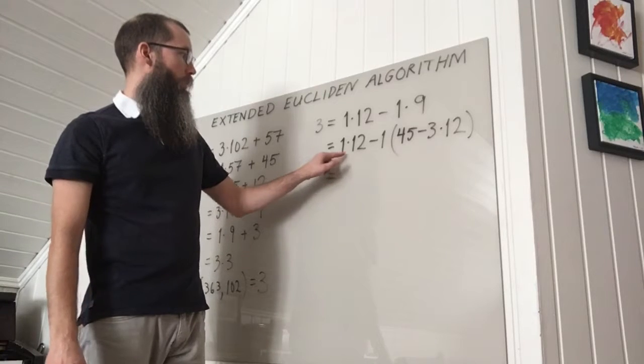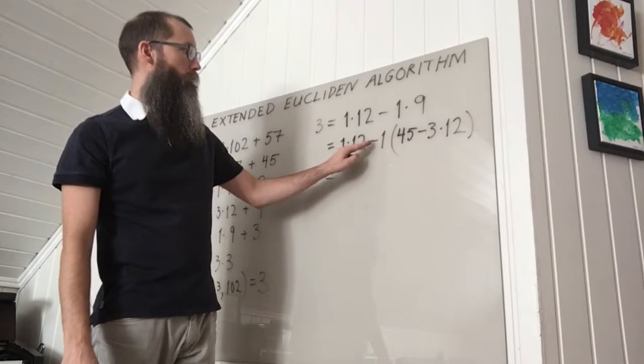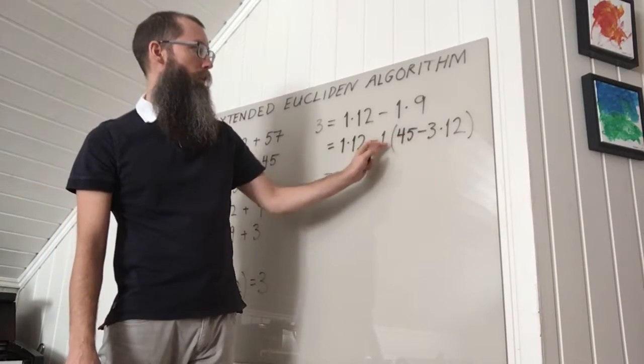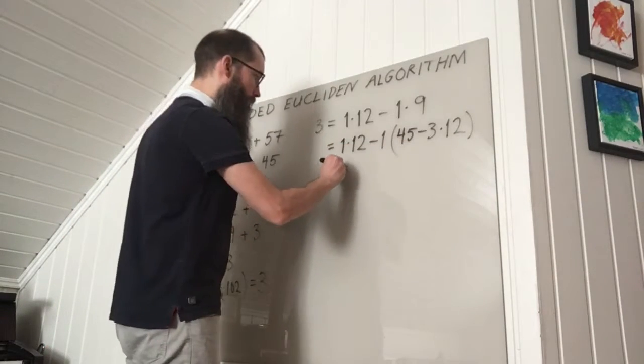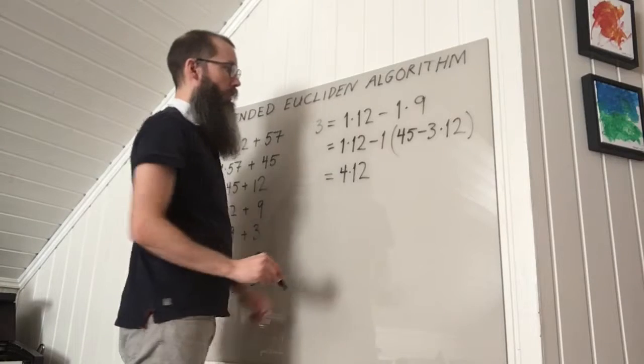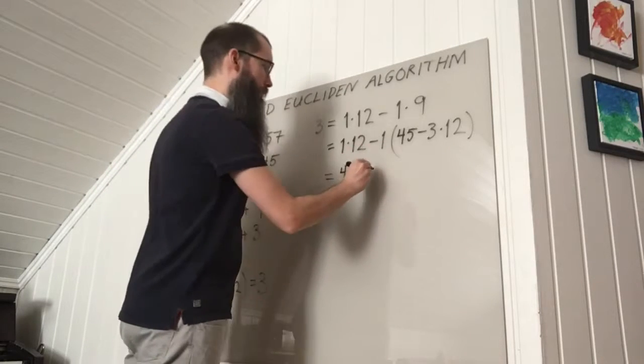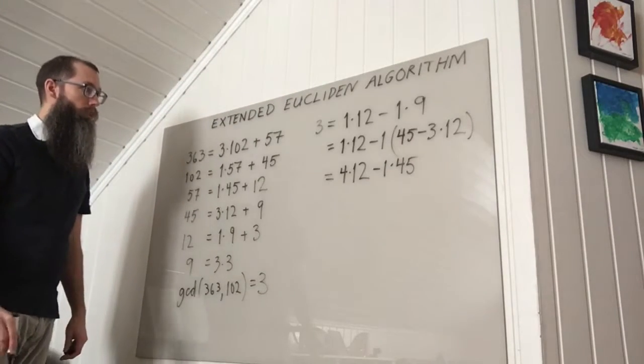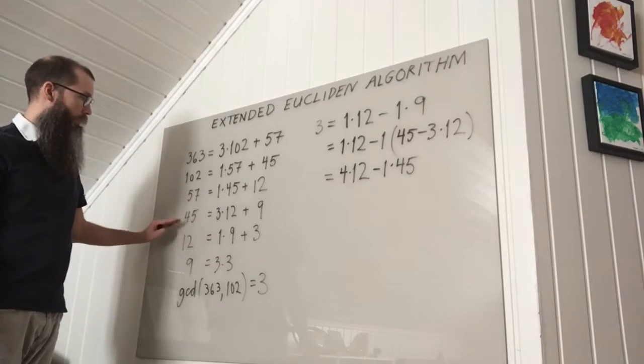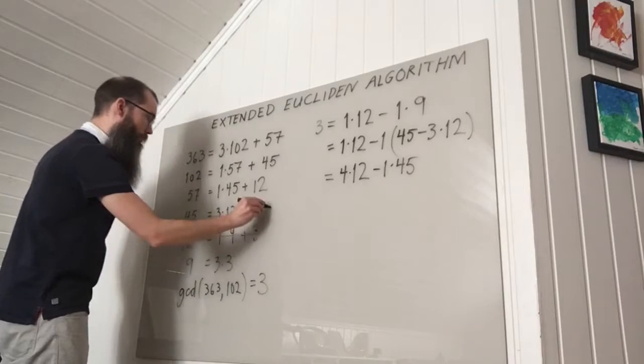So this is 1 times 12 and I have minus and minuses plus 3 times 12. So in total 4 times 12. And I have minus 1 times 45. So I'm done with these two lines. I can cross them out if I want.